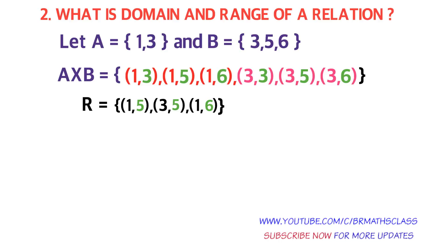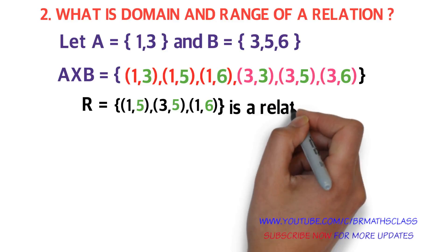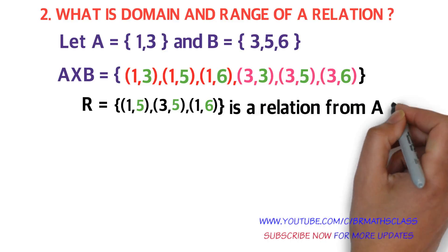Observe that all elements present in R are present in A×B. For example, ordered pair (1,5) is in A×B — yes, it is there. Ordered pair (3,5) is in A×B — yes, it is there. Ordered pair (1,6) is in A×B — yes, it is there. So R is a subset of A×B, and we say R is a relation from A to B.